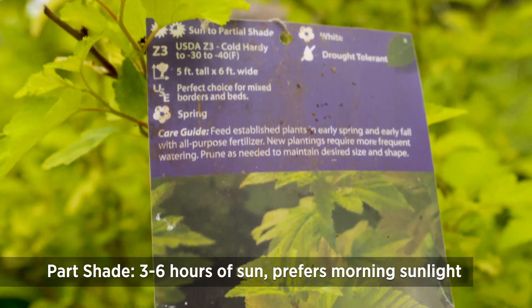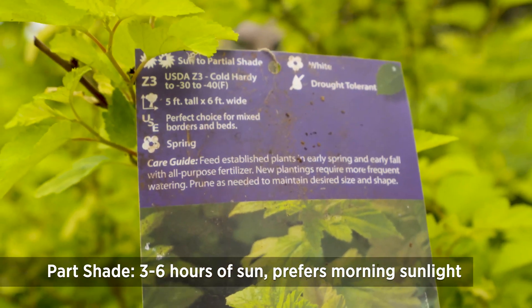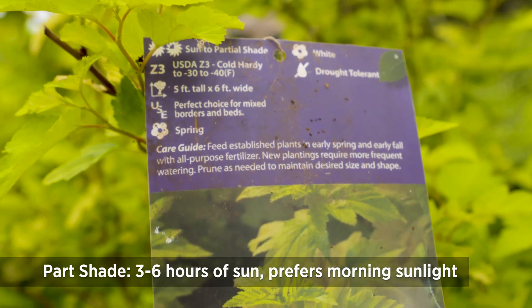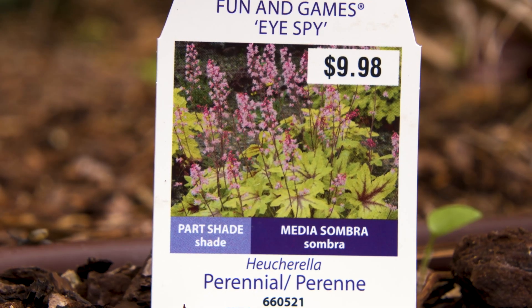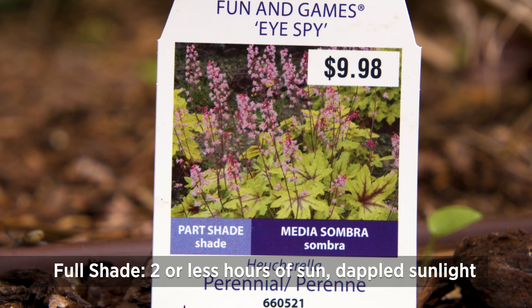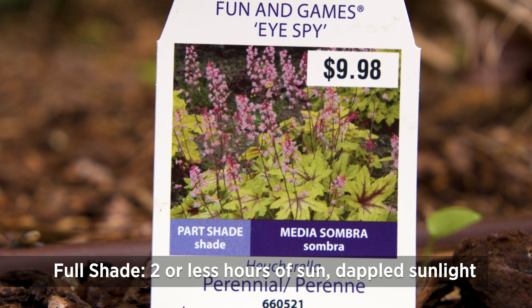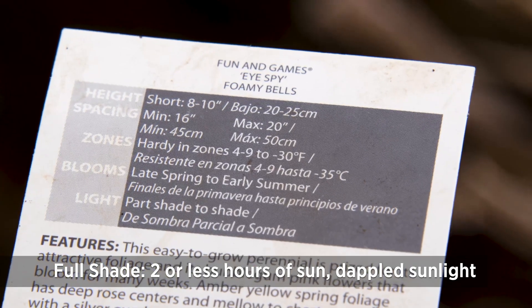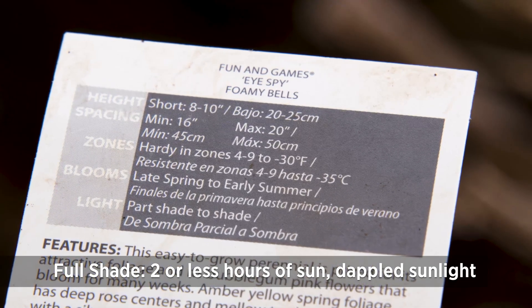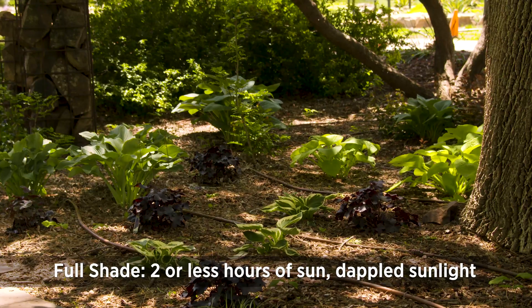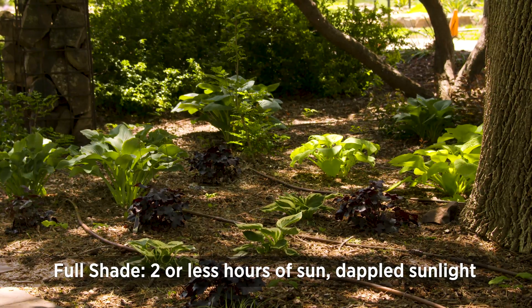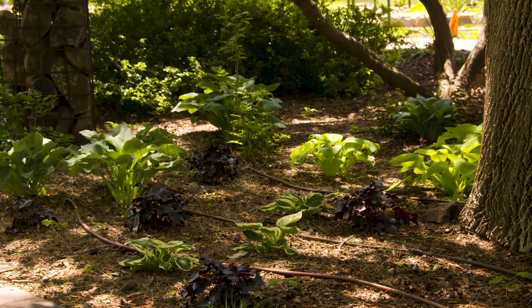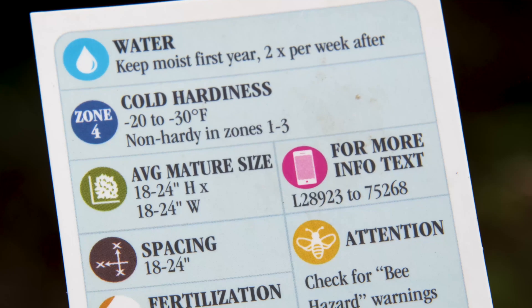A part shade plant also needs three to six hours of sunlight, but it does not like the more intense afternoon sun — it prefers the morning sun. Another term is full shade, or just shade, which means your plant would like two or less hours of sunlight each day. You could place it where it gets two hours of morning sun or underneath a tree where the light is filtered through the branches.